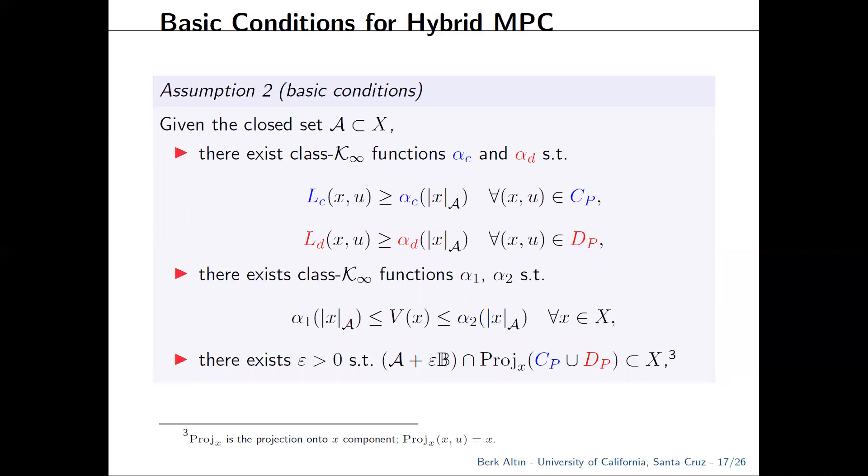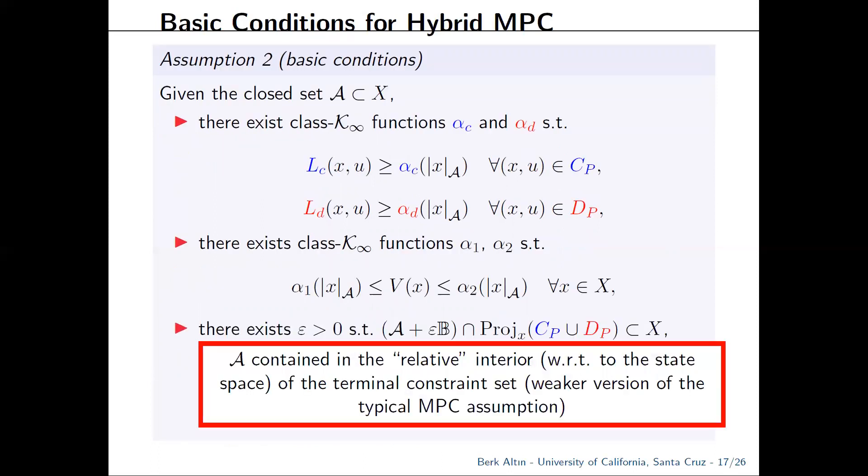Another condition we impose is that the target set A should have a neighborhood such that if we project that neighborhood to the state space, we should be in the terminal constraint set. So, that's weaker than the typical assumption where A is usually the origin and the state constraints contain neighborhood of the origin. That's restrictive for the hybrid case since A can often lie on the boundary. Think the bouncing ball.